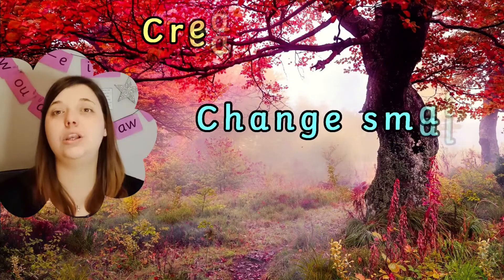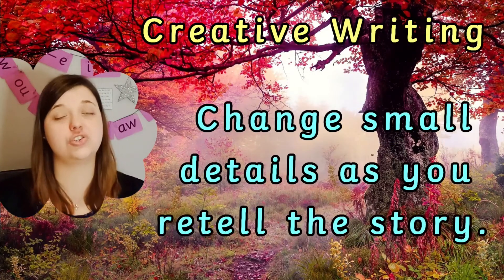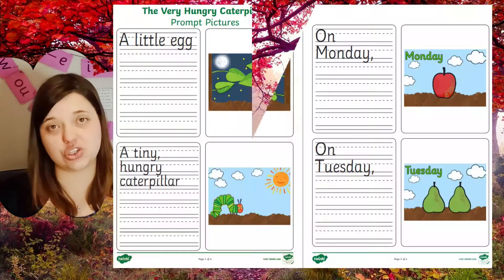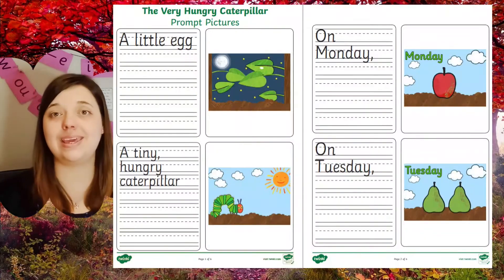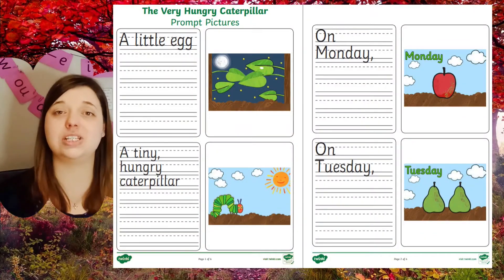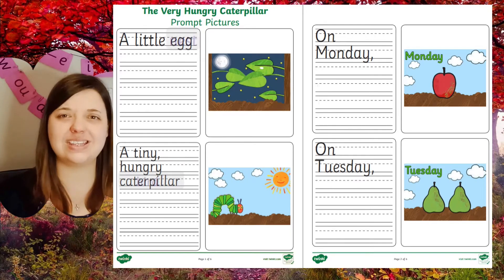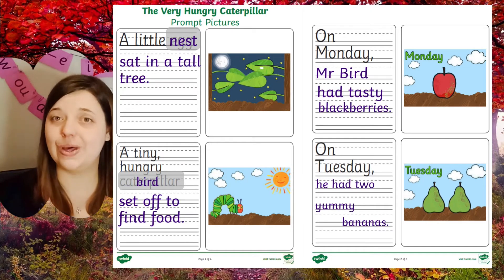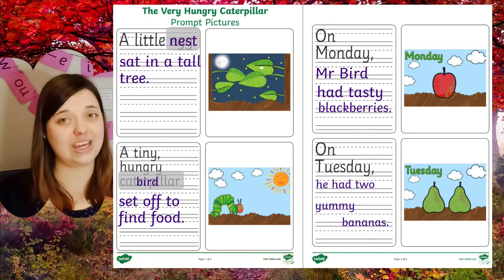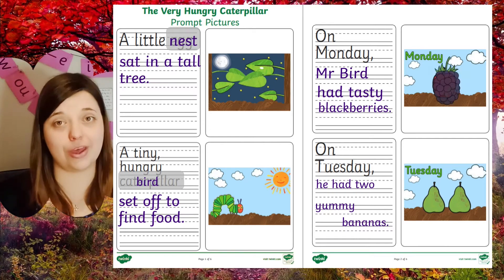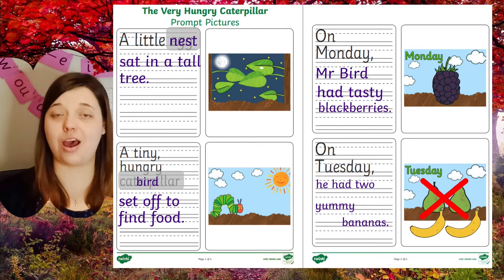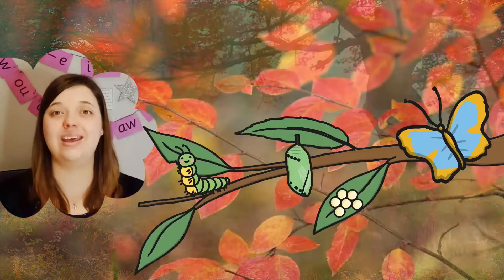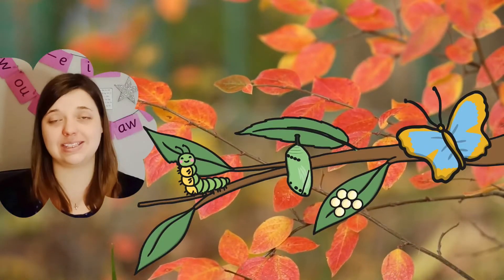This is also a lovely resource for supporting children in their own creative writing. Why not let them change the story by making it their own, using the images for inspiration and writing sentences with slightly altered details. For example, perhaps they can write about the very hungry bird who eats blackberries, bananas, and pizza instead of the caterpillar.